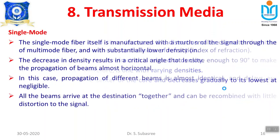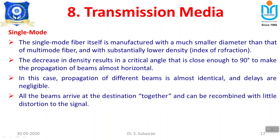Single mode fiber is manufactured with a smaller diameter — the thickness or diameter of the fiber is very small. When the fiber optic cable size is very thin, the cost is high. Single mode has lower refraction, high reflection, and light passes through at exactly 90 degrees. All the beams arrive at the destination together — at the same time and same speed — so there is no disturbance, less distortion to the signal, and very little interference compared to multi-mode.